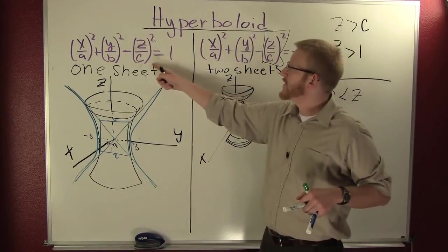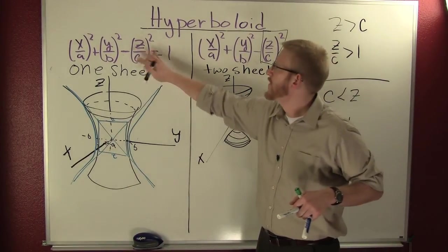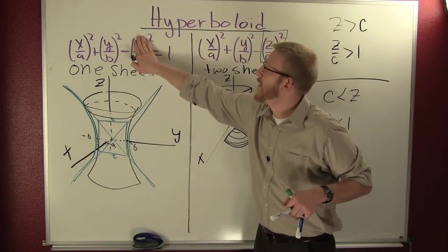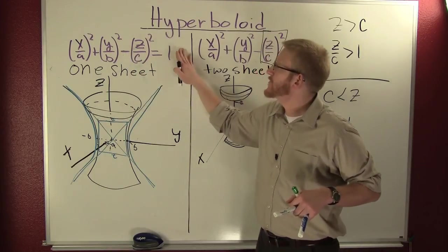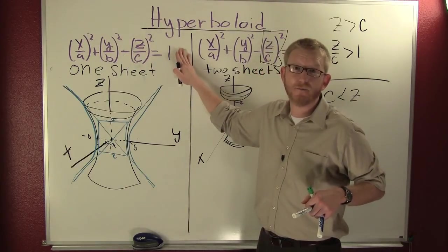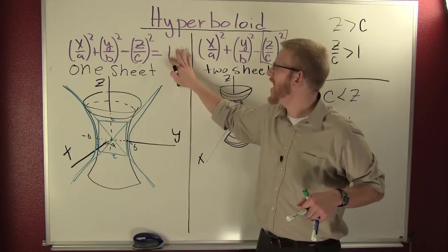Notice how that imaginary ellipse doesn't happen over here. Whatever this number is, it's going to be positive. Then you take the negative, the opposite of it, and when you add that to both sides, you're going to be adding a positive number to both sides. And then this is always going to be positive.